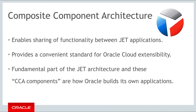In short, the composite component architecture enables you to create web component-based CCA components. CCA components enable you to share functionality between different JET applications. It also enables Oracle Cloud products to be extended. You will see one example of this in the next part of the course, where the Visual Builder Cloud Service will be extended by means of a CCA component created in JET. CCA components are fundamental to the JET architecture, and if we were to re-architect this course from scratch, we would place a far larger focus on this specific topic.